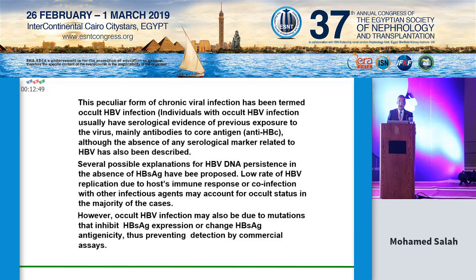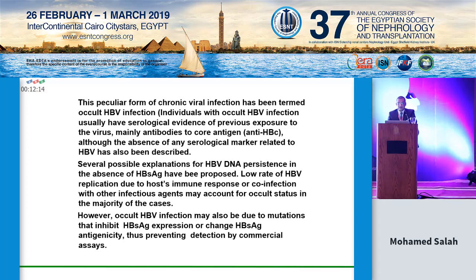This peculiar form of chronic viral infection has been termed occult hepatitis B virus infection. Individuals with occult hepatitis B infection usually have serological evidence of previous exposure to the virus, mainly antibodies to core antigen, although absence of any serological marker has also been described. Low rate of hepatitis B virus replication due to host immune response or co-infection with other agents may account for occult status in the majority of cases. Occult hepatitis B may also be due to mutations that inhibit hepatitis B surface antigen expression or change its antigenicity, preventing detection by commercially available assays.